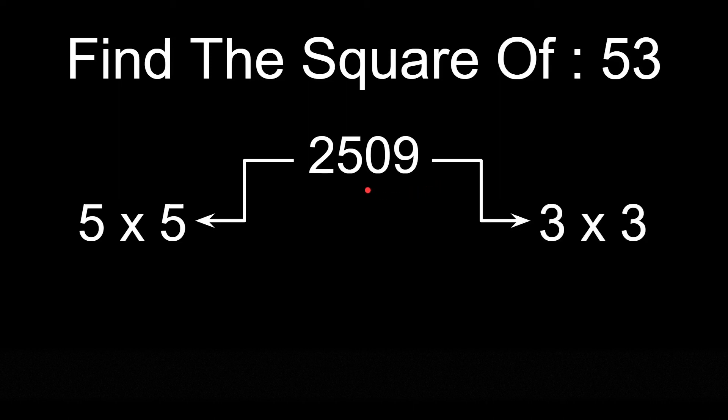But be careful so that the square of the unit's digit is always in 2 digits, not less than it. So we have added a 0 here.